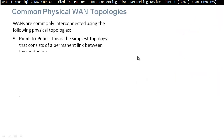Common physical wide area network topologies. Wide area networks are commonly interconnected using the following physical topologies. For example, point-to-point: this is the simplest topology that consists of a permanent link between two endpoints, and it's easiest to configure as well.